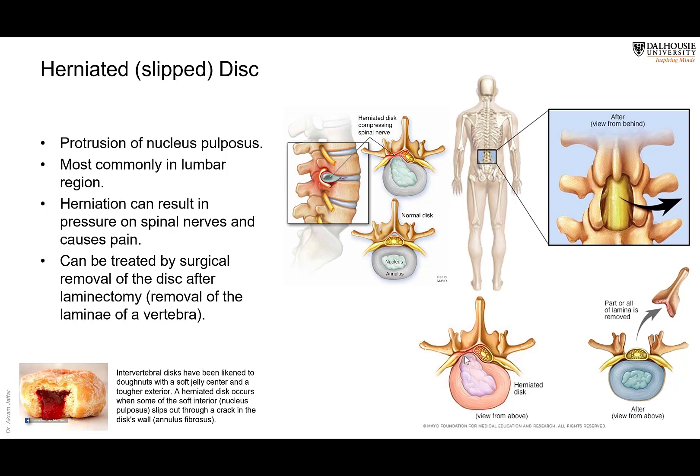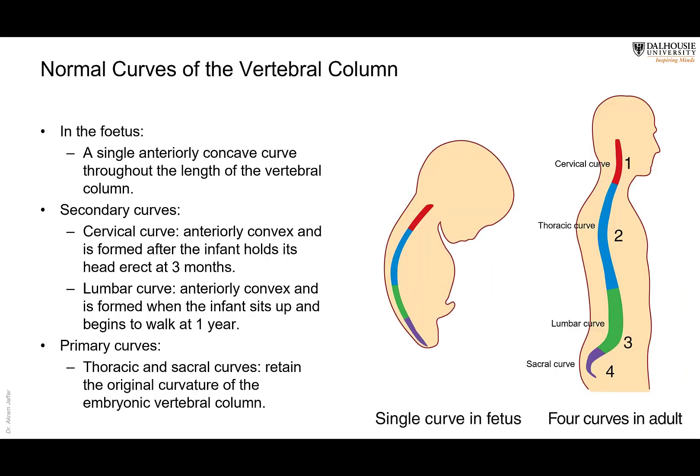To relieve the pressure from disc herniation, surgeons make an incision at the back and remove the laminae along with the spinous process of the affected vertebra. This operation is called a laminectomy — the cutting of the lamina. The laminae are the flattened parts of the vertebral arch.